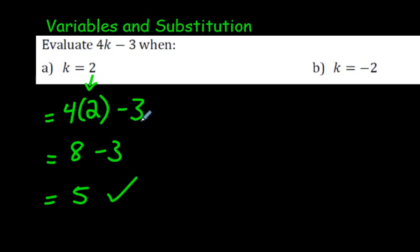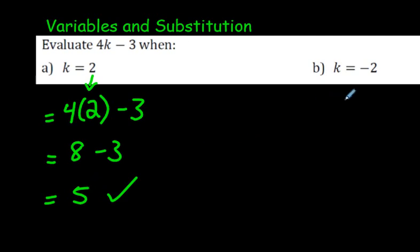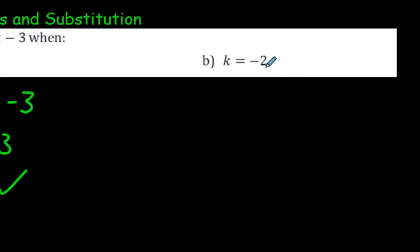So, k, when k is 2, the answer is 5. Let's try the next one. What if k was negative 2?